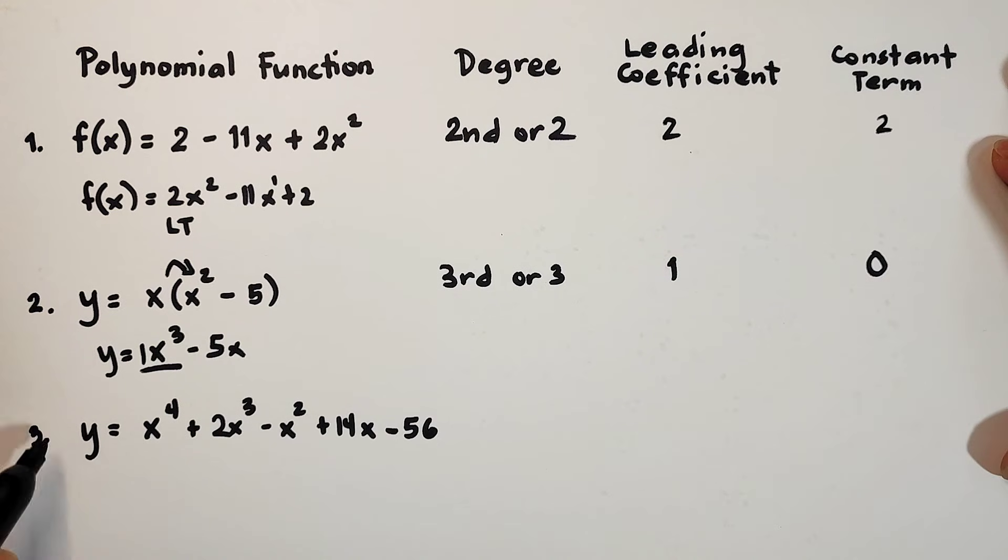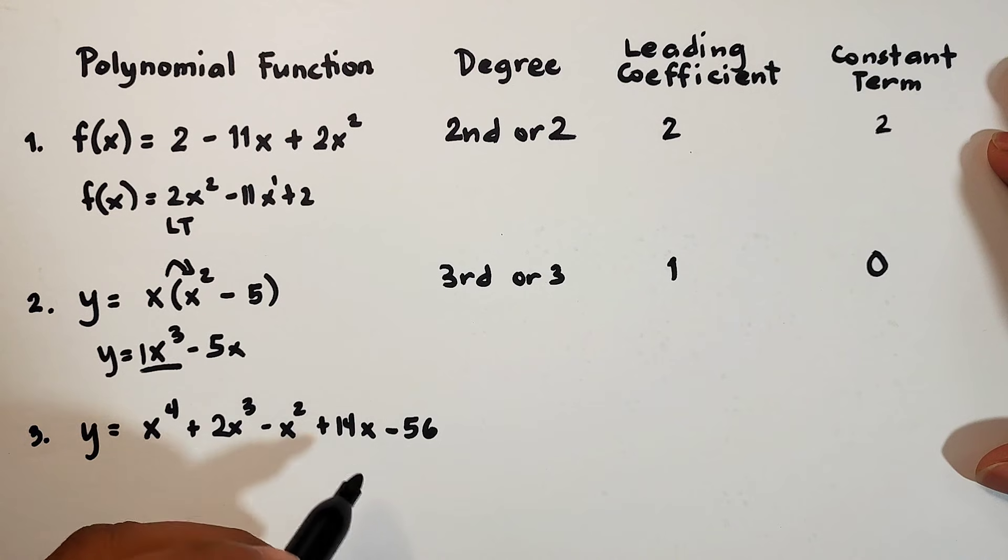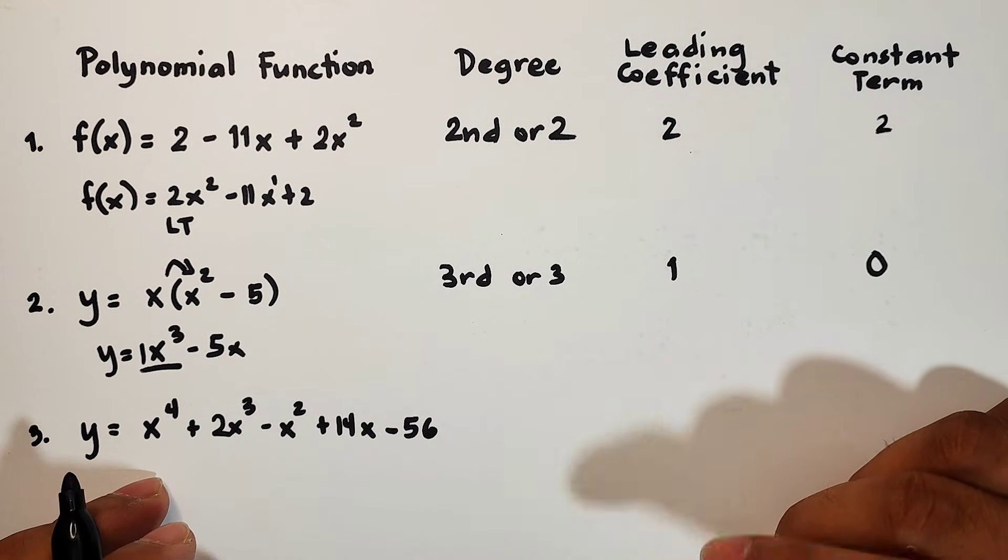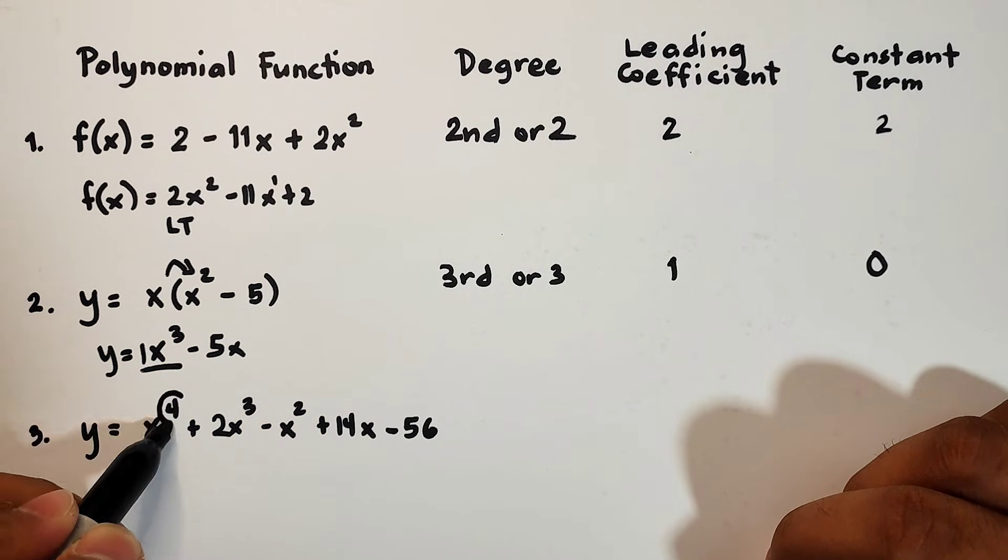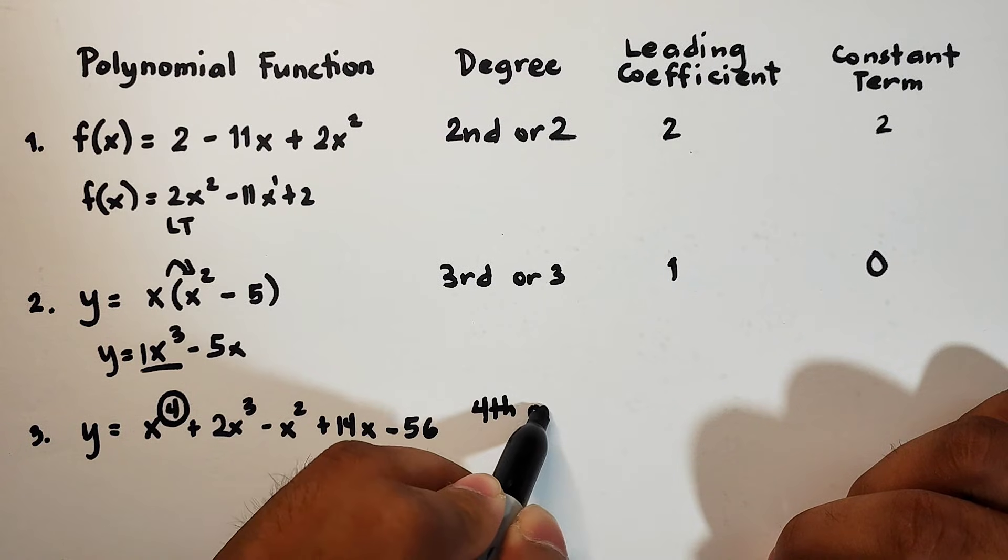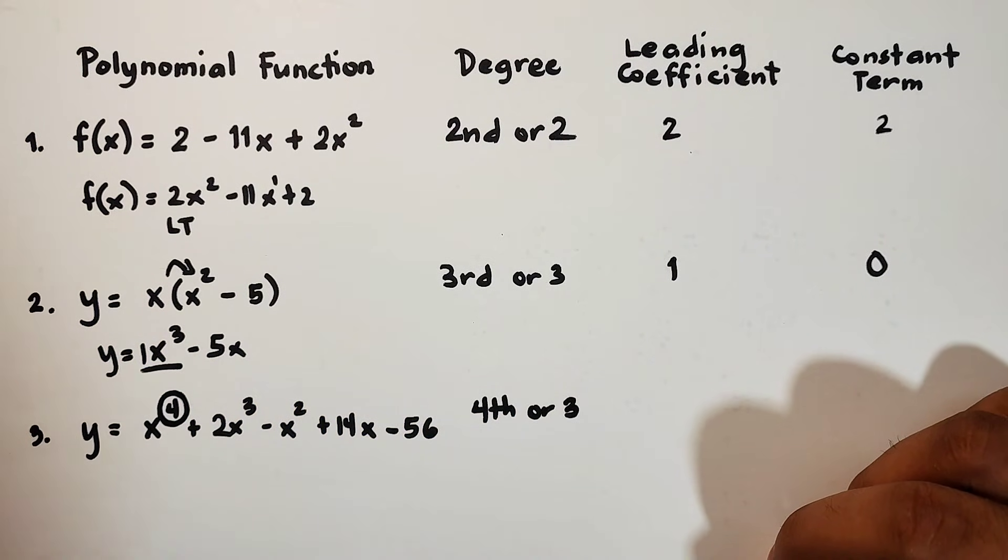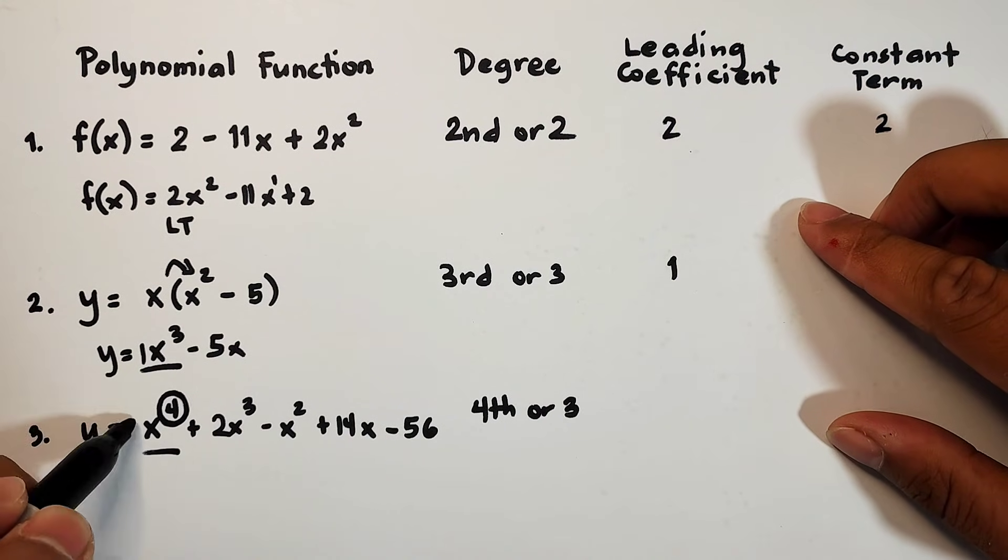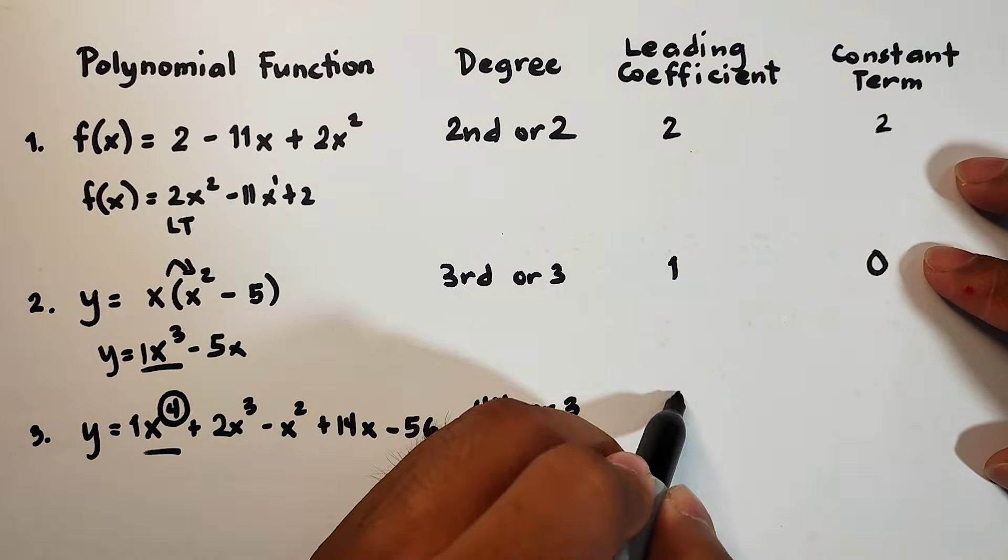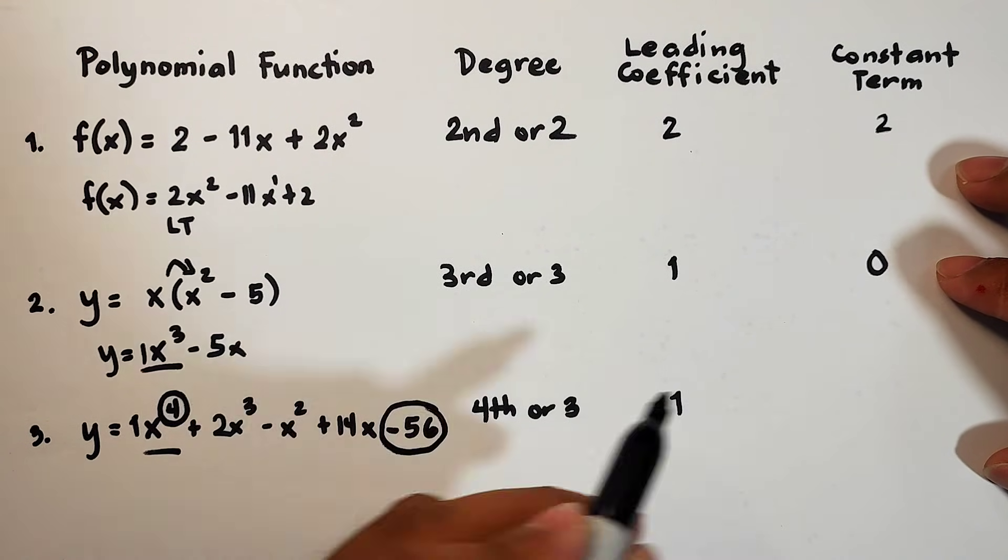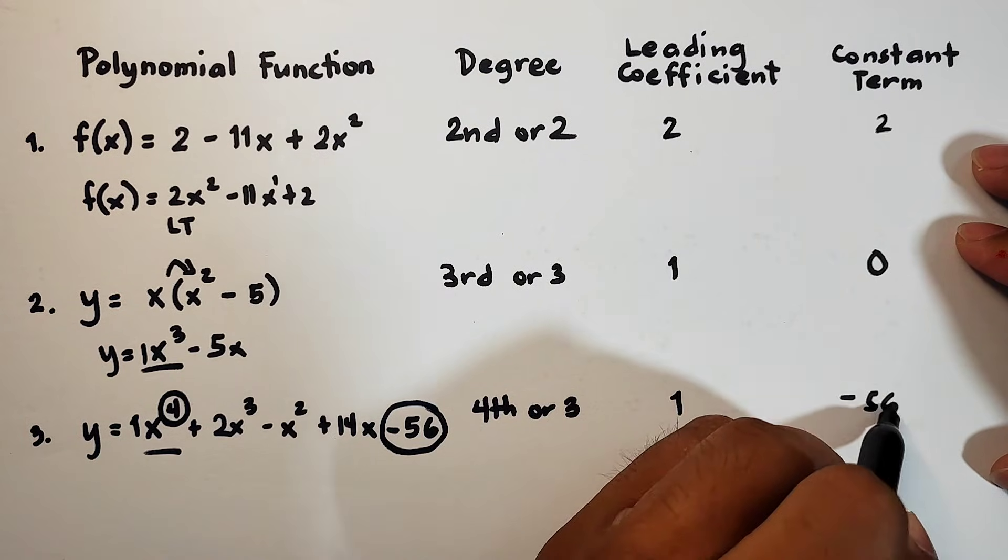Let's move on with number 3. y is equal to x to the 4th power plus 2x cubed minus x squared plus 14x minus 56. This one is properly arranged. The degree is 4th degree or 4. The leading coefficient is invisible 1, so this is 1. The constant term is negative 56.